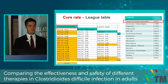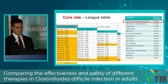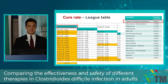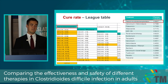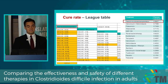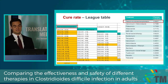For example, when we compare FMT with fidaxomicin, we see that there is almost six times higher chance of recovery in the FMT arm. The confidence interval is shown in brackets, and if both elements are greater than one, in that case we can say the result is mathematically significant. According to this league table, FMT is mathematically significantly better than the other treatments, and if we check the P-score, we see that FMT's P-score is significantly larger than the others.